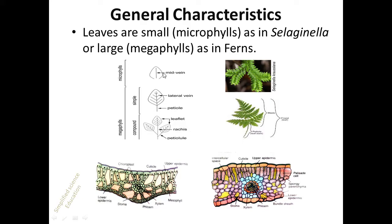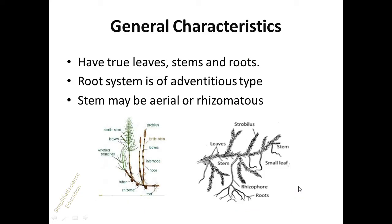Pteridophytes have two types of leaves: microphylls, which are simple and small, have a central vein, and have no leaf gap; and megaphylls, which are larger, pinnately compound leaves with lateral veins and leaf gaps. An example of microphylls is Selaginella, and an example of megaphylls is ferns. In megaphylls, leaf mesophyll is also differentiated into palisade cells and spongy parenchyma.